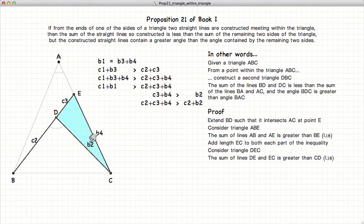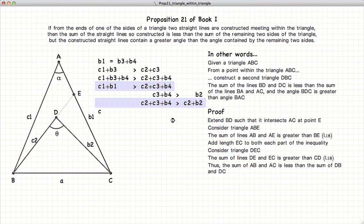If we add C2 to both sides of that equation, we end up with C2 plus C3 plus B4 is greater than C2 plus B2. And if we look at these two equations,